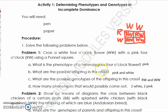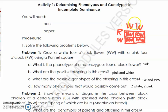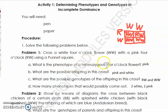What is the phenotype of a heterozygous four o'clock flower? Phenotype refers to physical appearance — the color of the flower. WW has the same letters, so it is homozygous. RR is also homozygous. The only genotype with different letters is RW, which is heterozygous. The color of RW is pink, so the phenotype of a heterozygous four o'clock flower is pink.